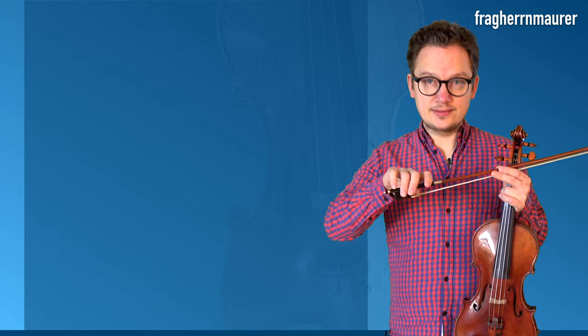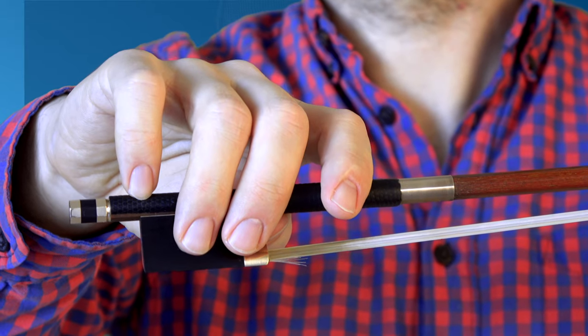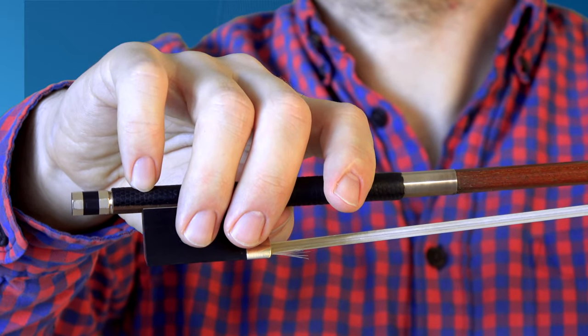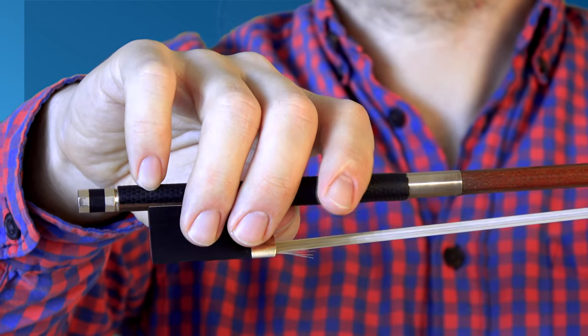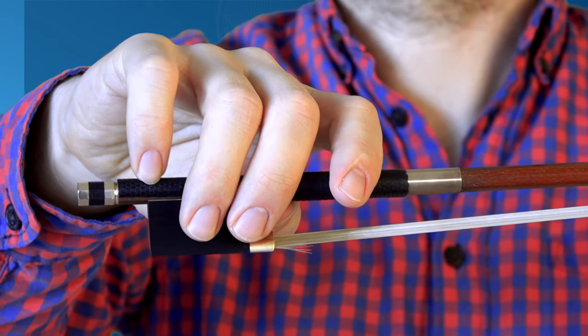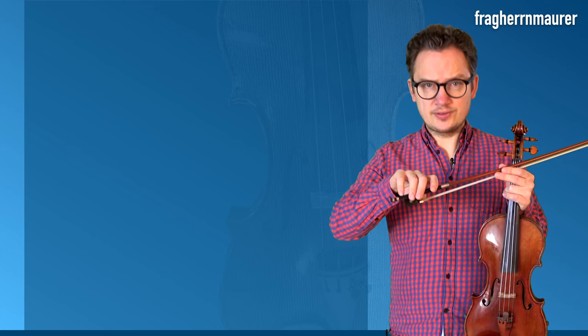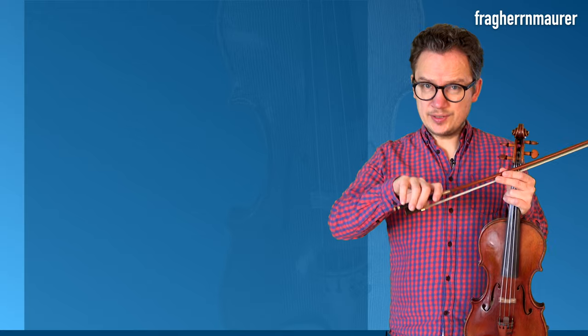All four fingers are sitting on the bow with a natural distance to one another. The only exception is the first finger which can sit a bit further away from the second finger. In this position the fingers cover a larger part of the bow and help control it better.